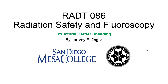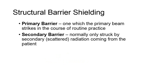Structural Barrier Shielding: Any structural barrier, including walls, floors, the ceiling, and windows, can protect you from radiation. These are generally divided into primary and secondary barrier categories. A primary barrier is one which the primary beam strikes in the course of routine practice. A secondary barrier is normally only struck by secondary or scattered radiation coming from the patient.